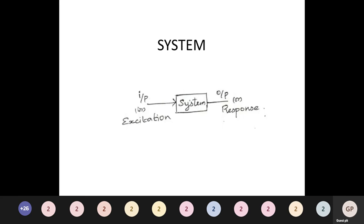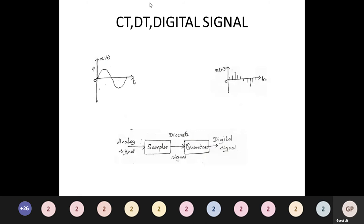Representation of a signal by a mathematical expression is called signal modeling. By this we can classify signals into continuous time (CT), discrete time (DT), and digital signals. A continuous time signal is defined as a signal that exists at each and every instant of time, denoted as x(t). These signals are also called analog signals, which are continuous in amplitude.